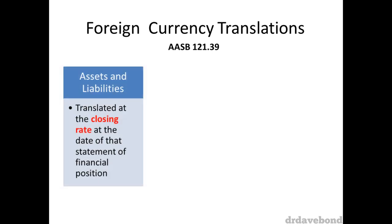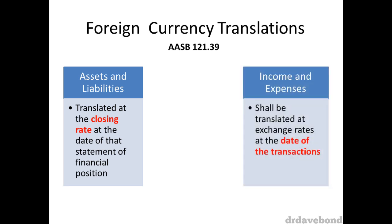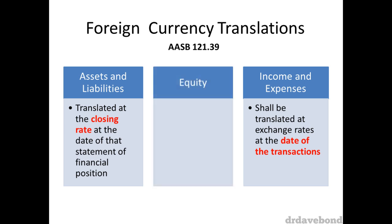Assets and liabilities are translated using the closing rate at the date of that statement of financial position. Income and expenses are translated using the exchange rates at the date of the transactions. Equity isn't really discussed in detail, but we're going to look at how it generally gets dealt with in the example that we look at.